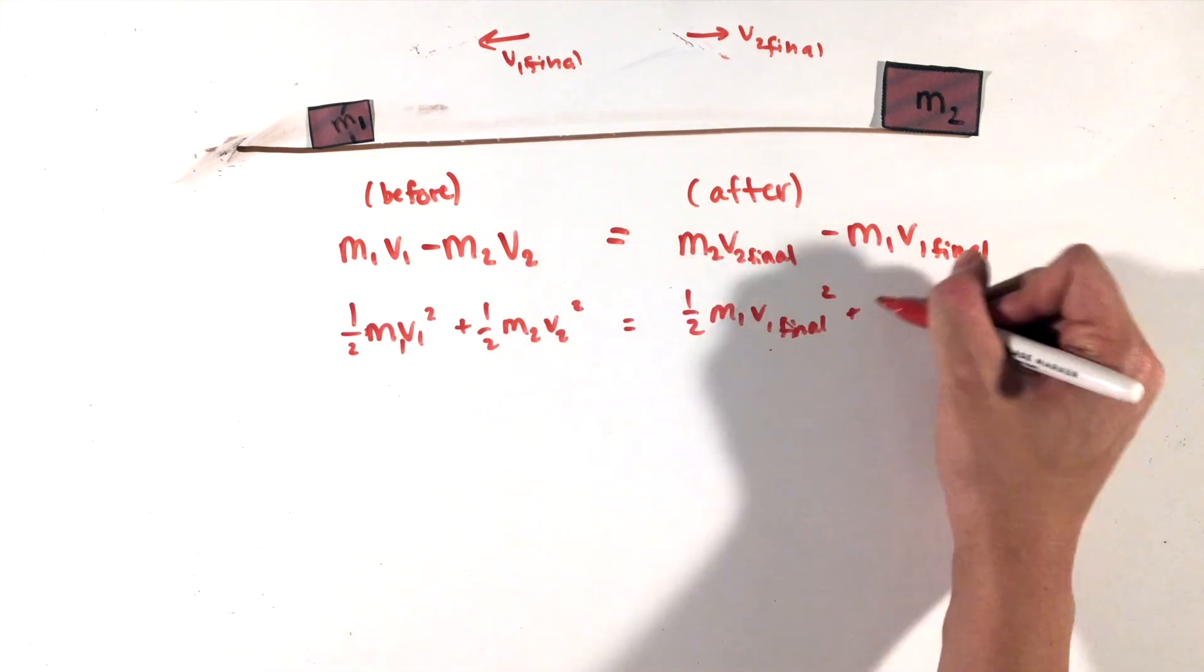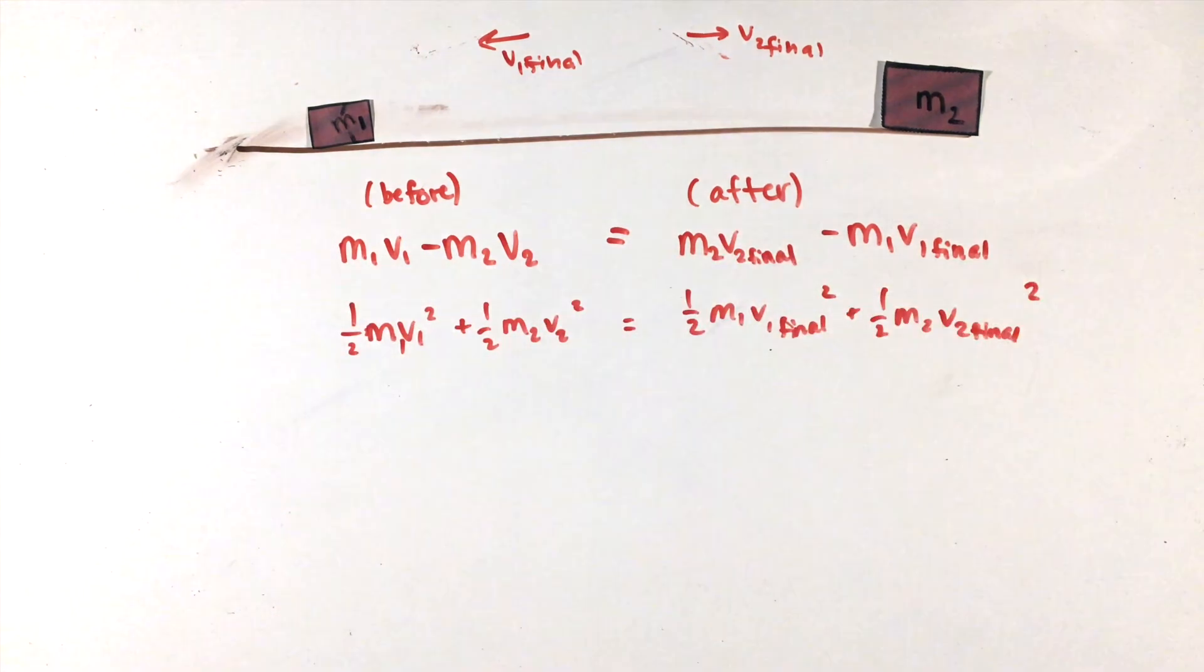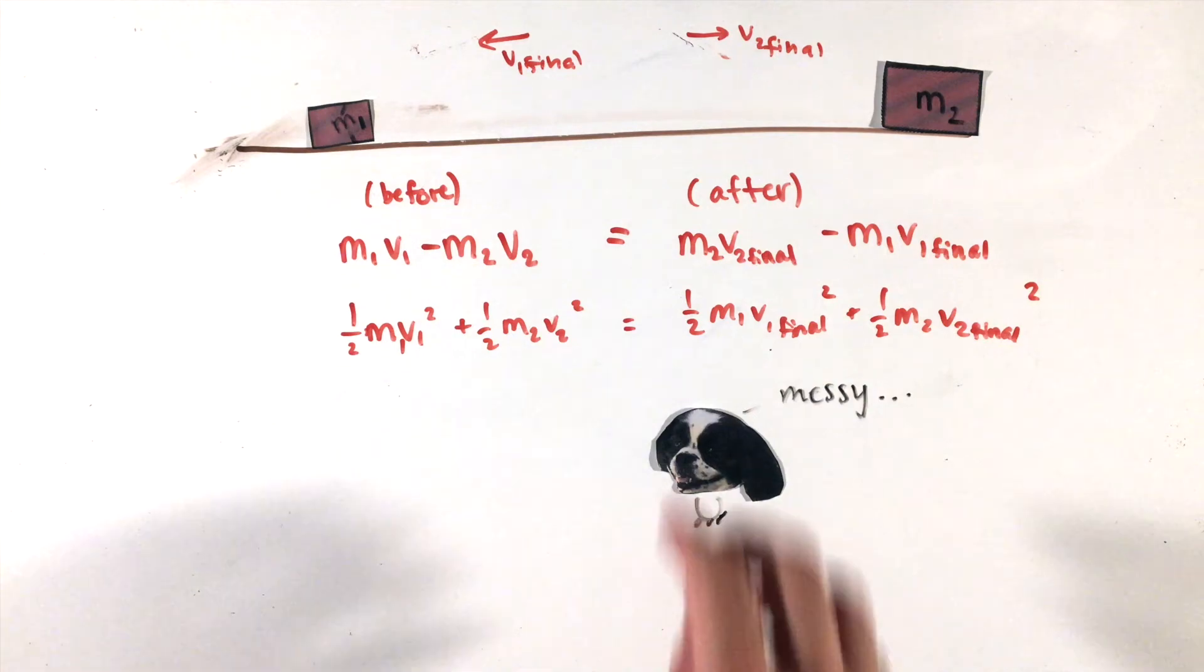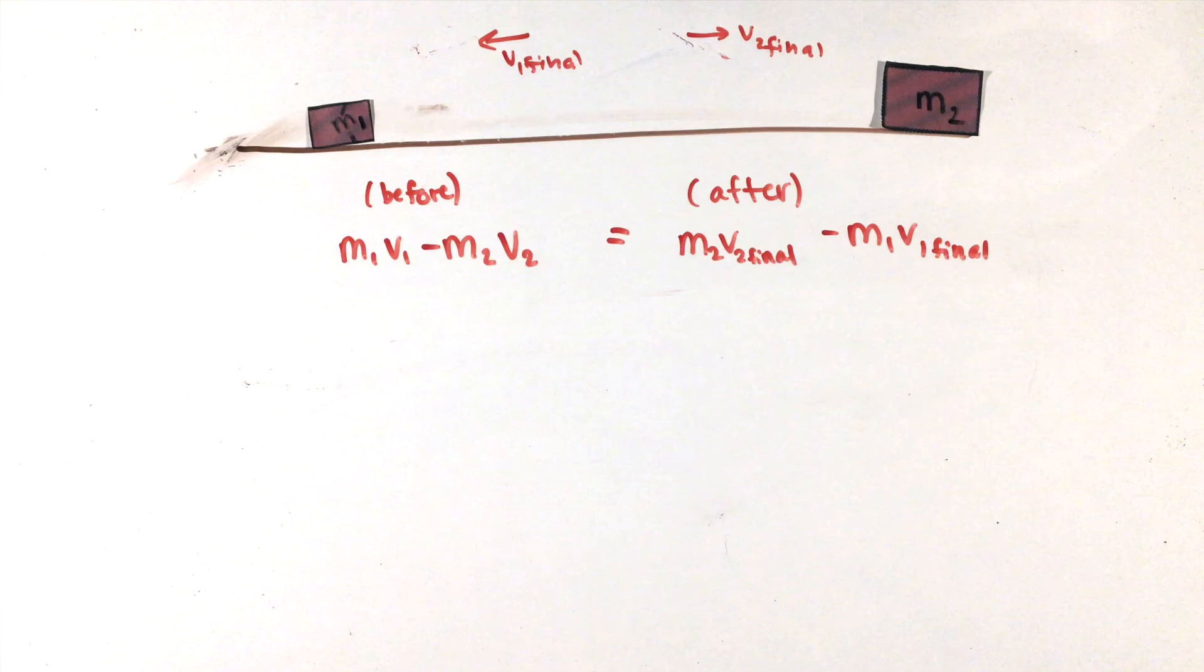we can use the fact that the kinetic energies before and after must be the same, but this system of equations can get messy. Instead, a super convenient second equation to use instead of energy conservation is that the relative velocity of the two objects, or the difference in the velocities before and after the collisions, will always swap,